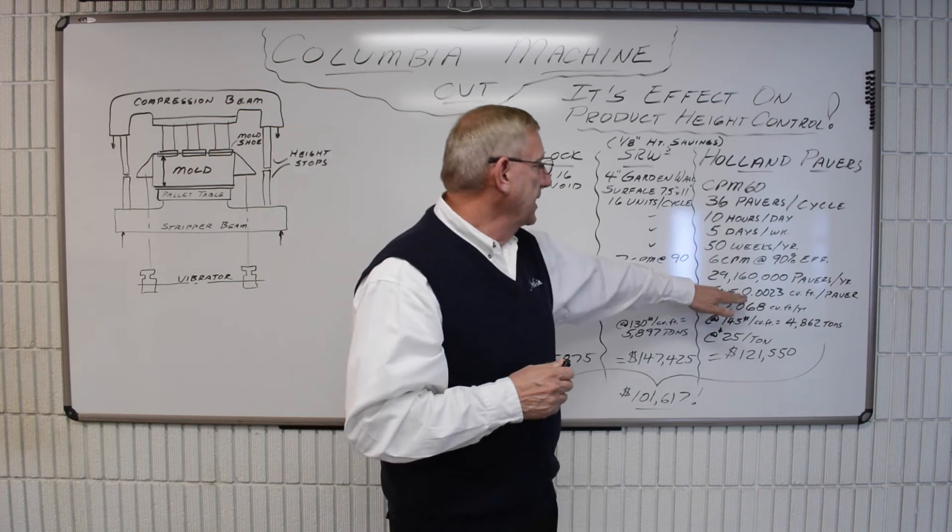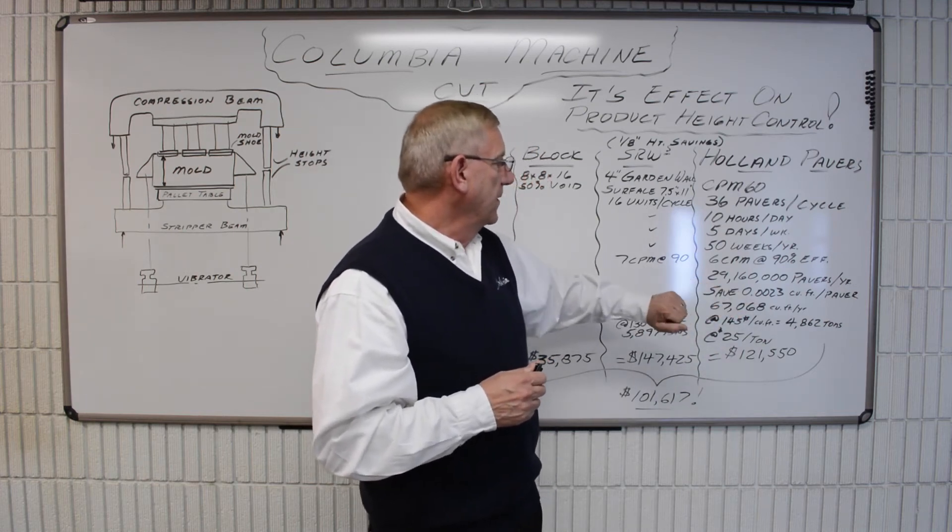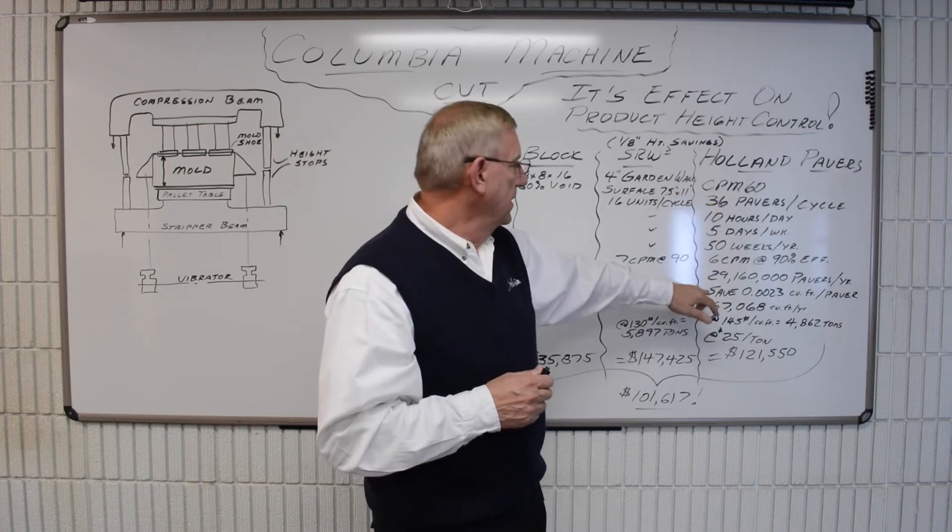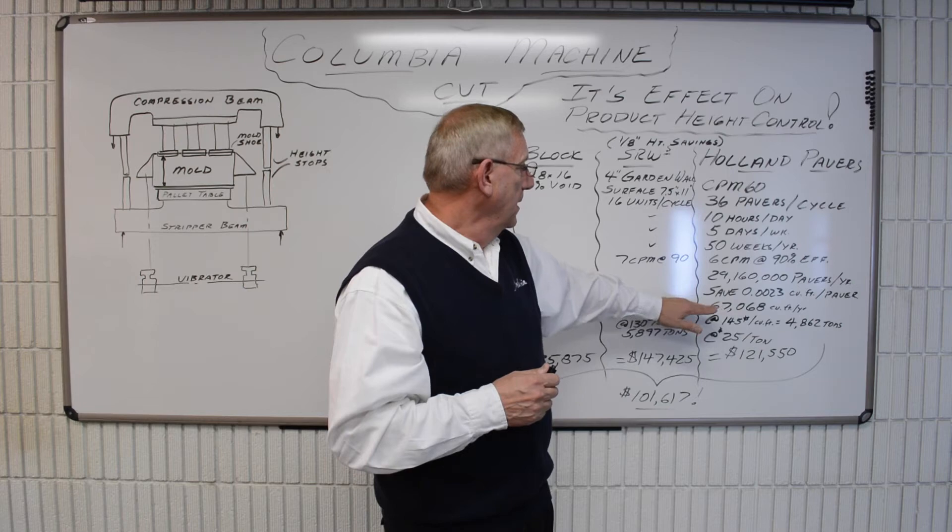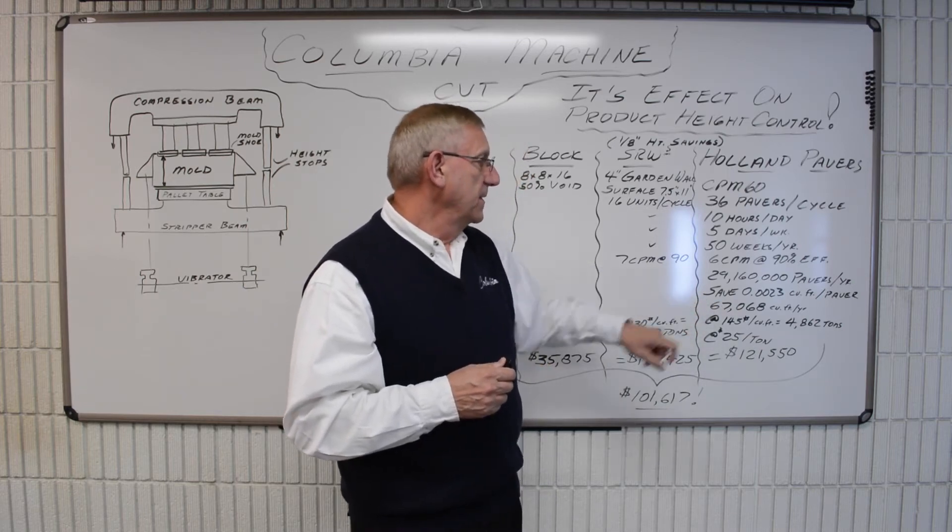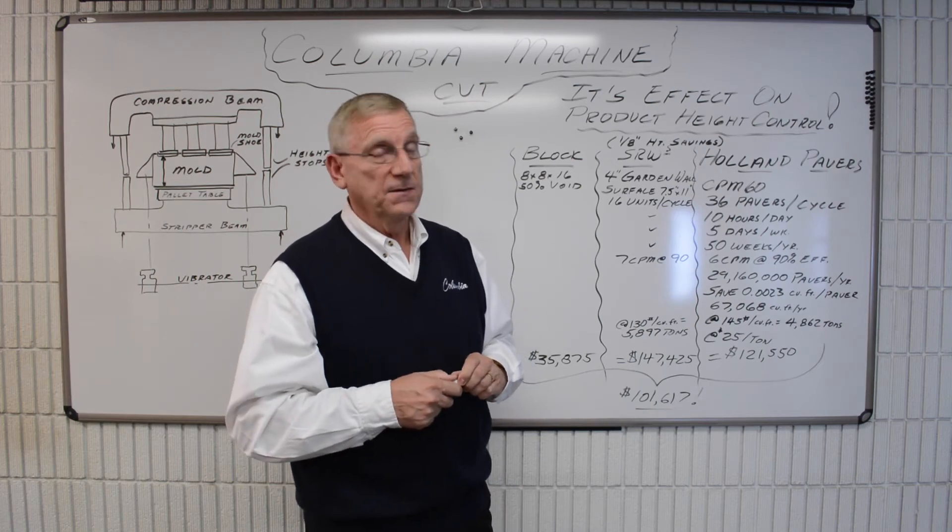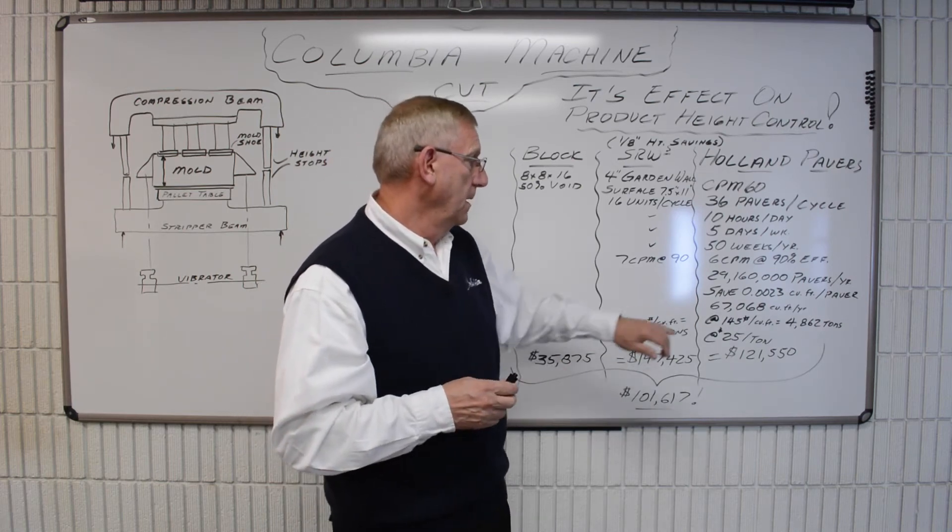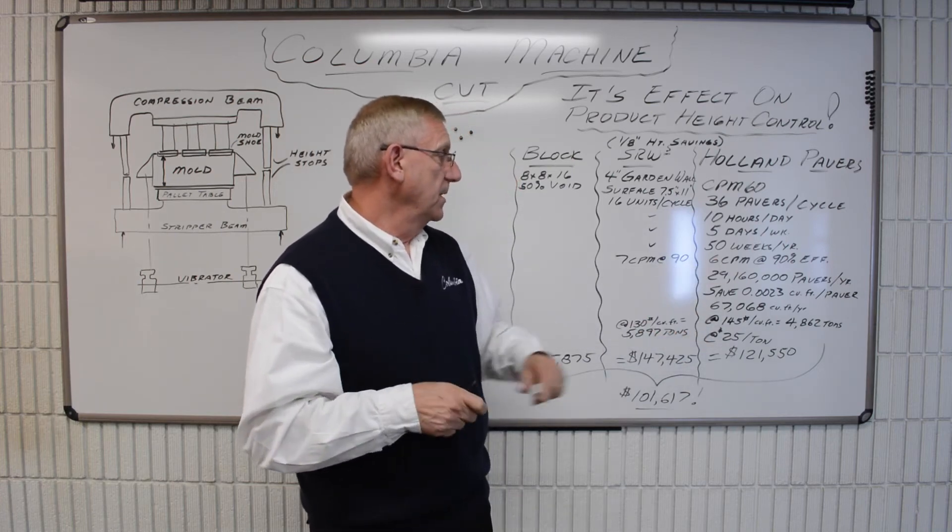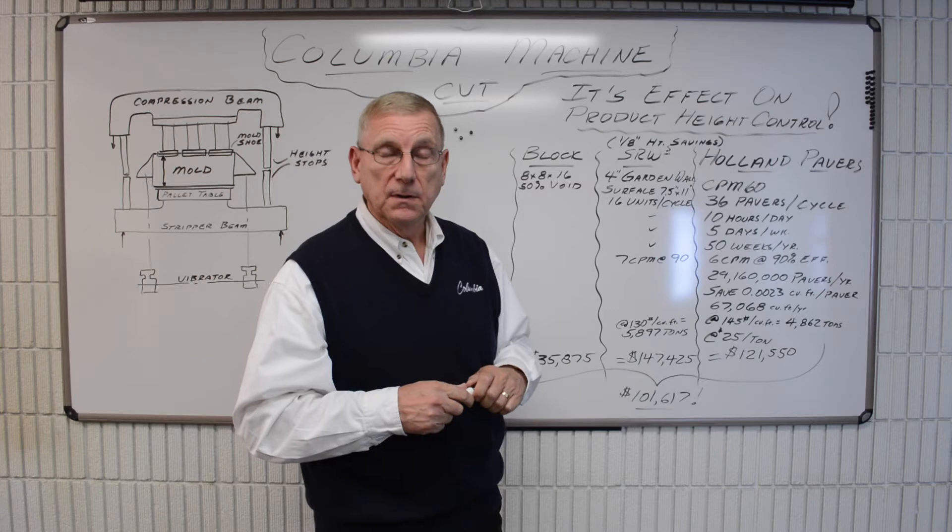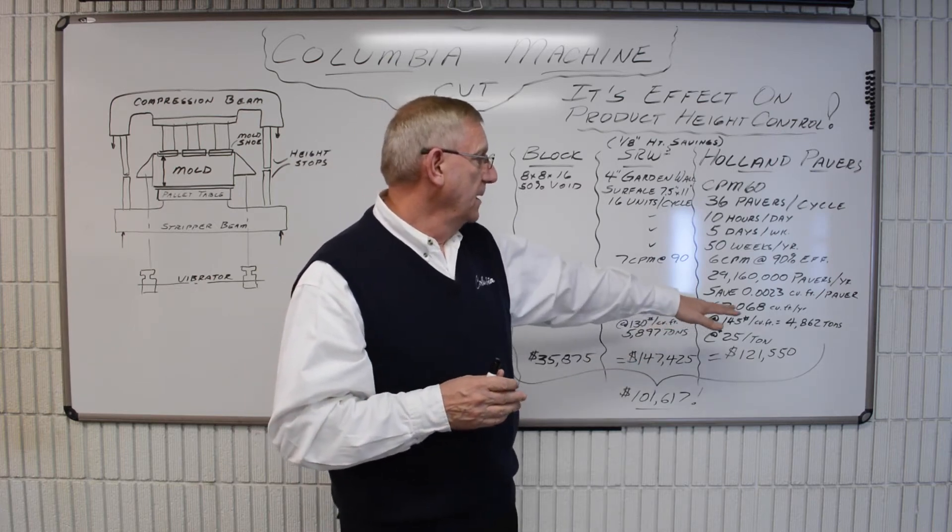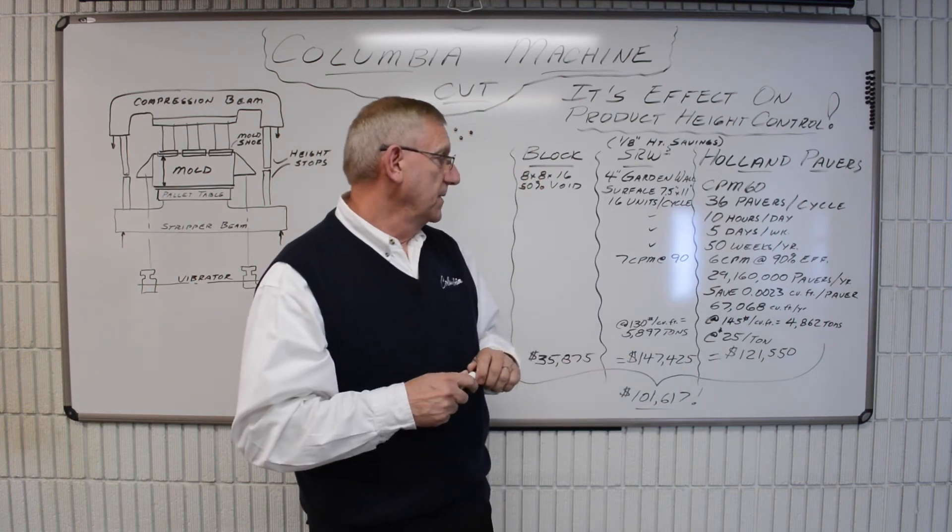So if we take that amount of material per paver and we extrapolate that over the number of pavers produced in a year, now we're talking about 67,000 cubic feet of concrete saved per year. And using an assumed density of 145 pounds per cubic foot, I know this varies but if we just assume that, that turns into over 4,800 tons of concrete.